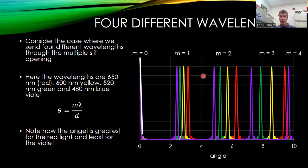So what I've created is a simulation of, you know, red light at 650, yellow light at around 600, sort of yellowish orange light, green light at around 520, and then blue violet light around 480 nanometers.